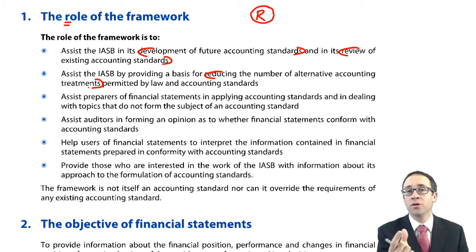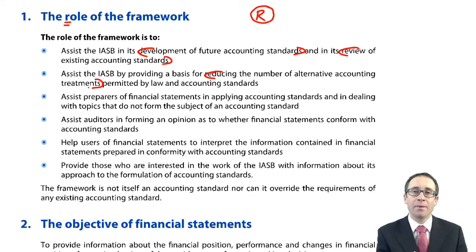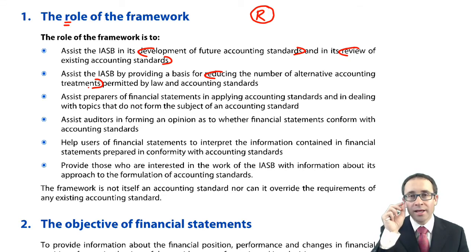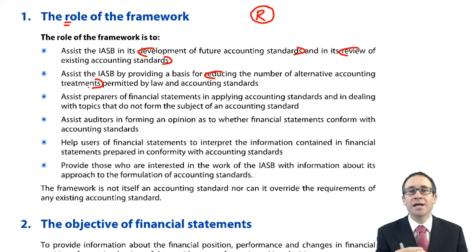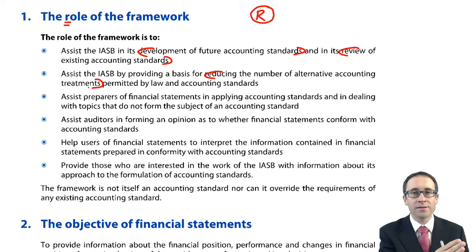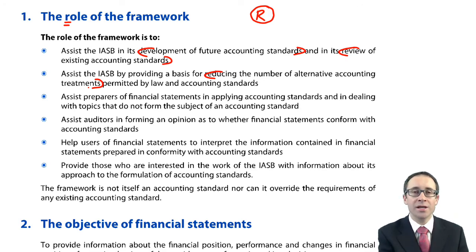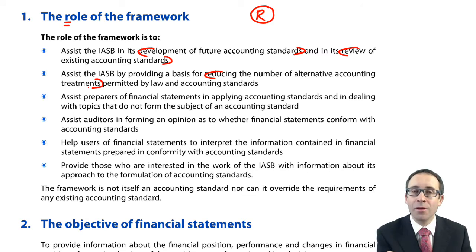Now, to ensure that there is more comparability between entities, we are only able to capitalise the cost. Similarly, if we look at intangibles — thinking about development expenditure — it now has to be capitalised. Previously, you had the option to either capitalise it or expense it, and that limited the comparability between entities year on year. So now the framework has ensured there are fewer alternative accounting treatments available.